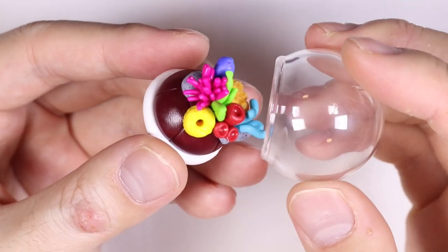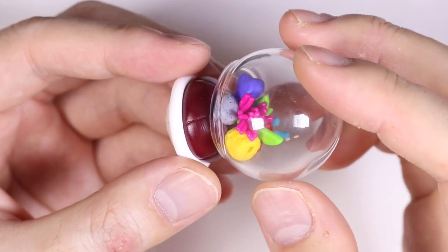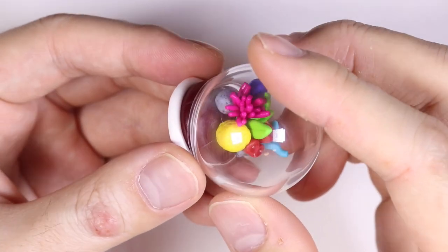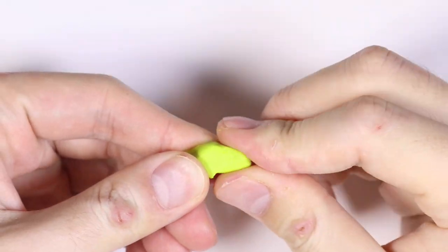Before you bake it, you want to make sure that all of it fits under the dome or else you can't put the dome on top.